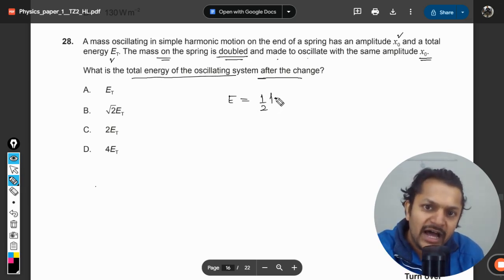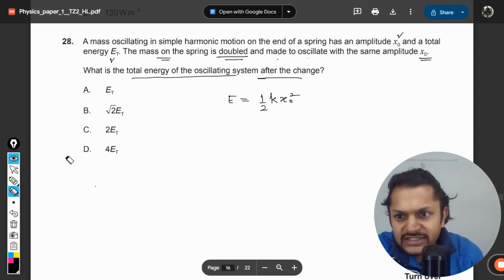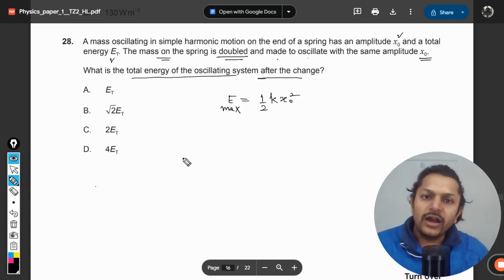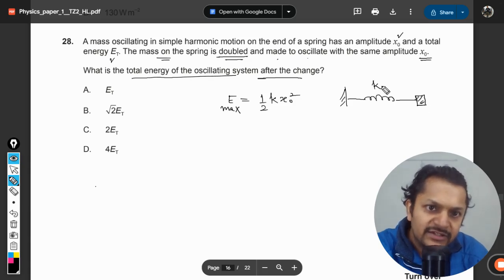So x₀² is the amplitude. This is the formula for the max energy. Now if we use this formula where k is a spring constant and we are not messing up with the spring, so k remains constant. The mass is 2m but the amplitude remains the same, x₀.